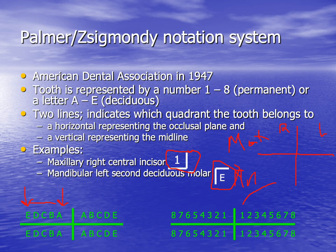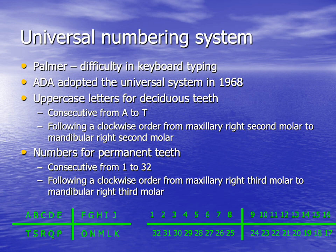In the permanent dentition, the Palmer system starts with number 1 for the central incisor going back to 8 for the third molar. However, when writing a letter to a colleague on a computer, vertical and horizontal lines cannot easily be typed using a keyboard, which is why the Universal numbering system or the FDI numbering system can be used instead.